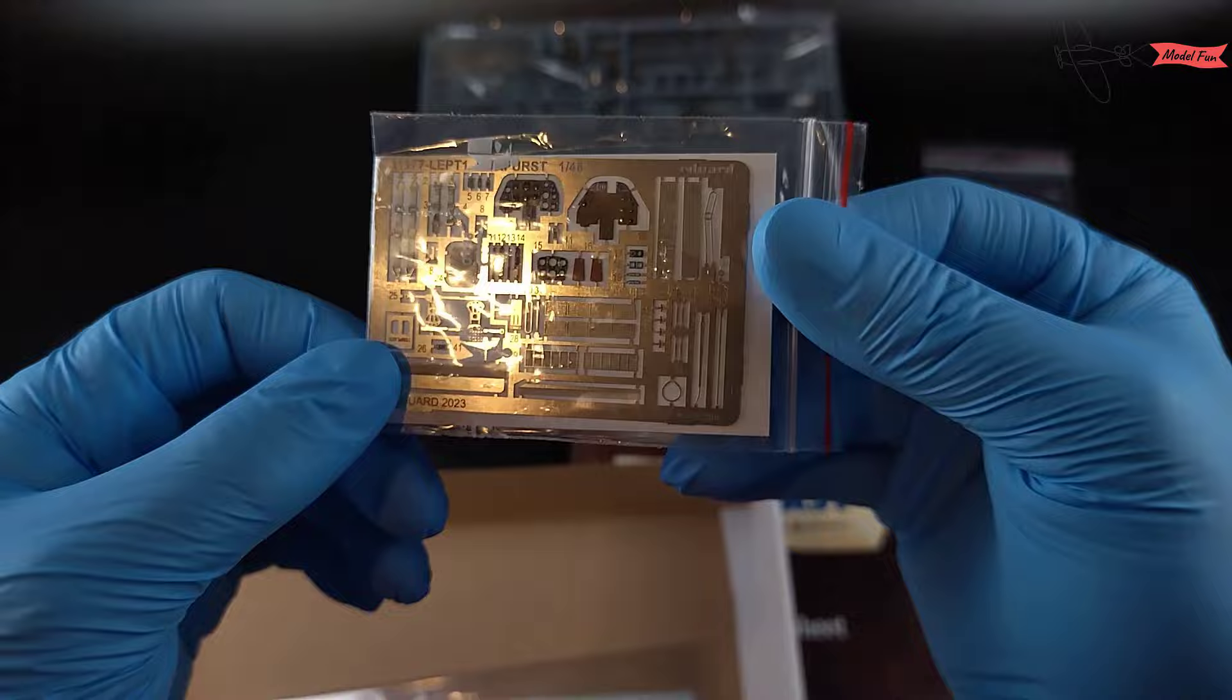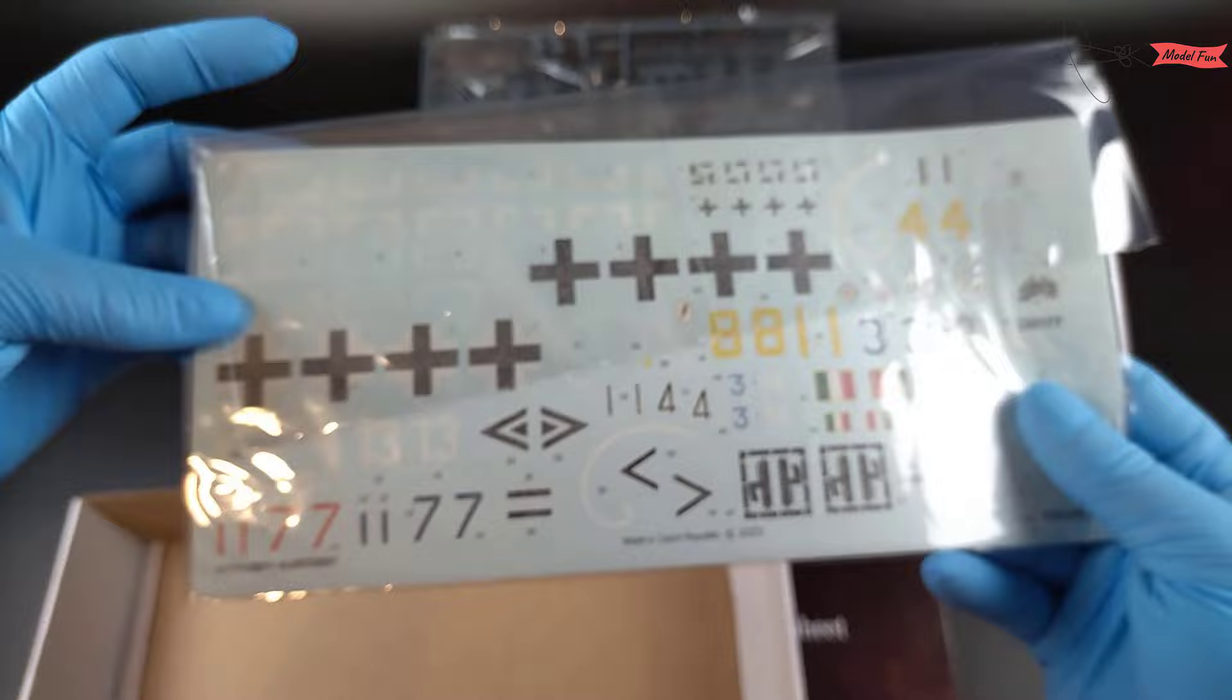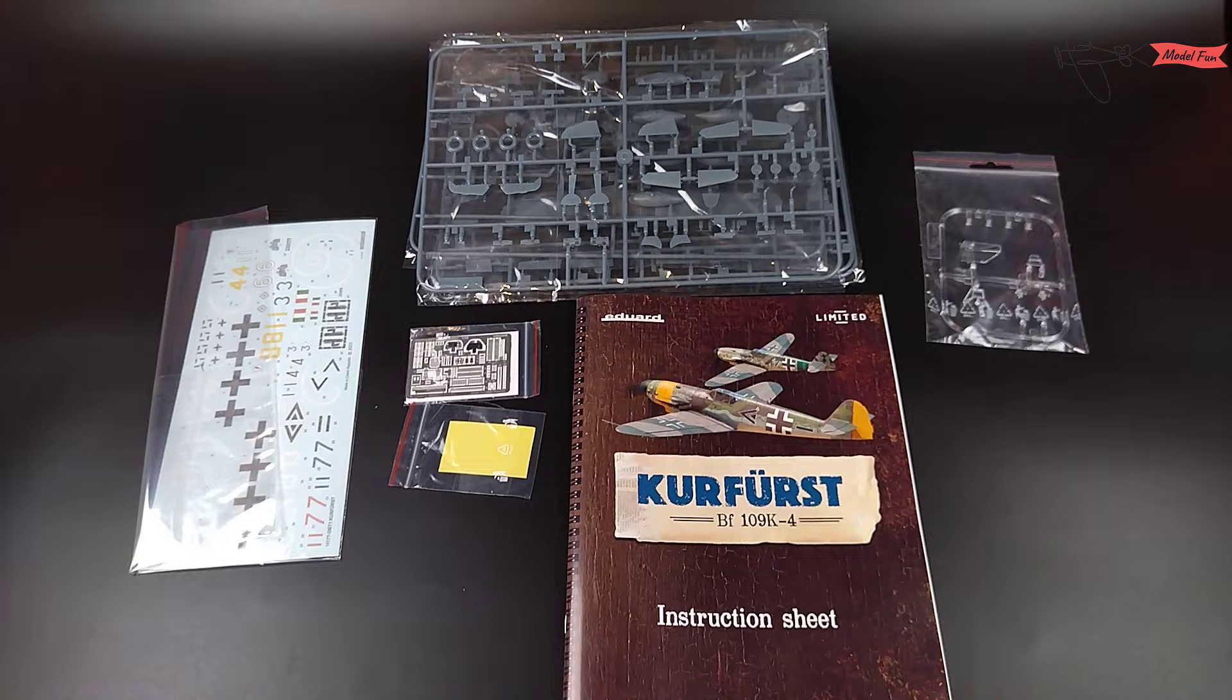Inside, apart from plastic parts, we also have a very nicely looking instruction sheet, photo-etched parts, masks for canopy and wheels, and decals together with stencils.